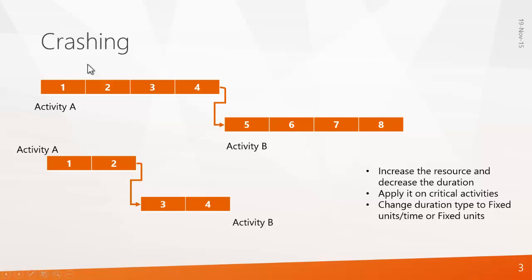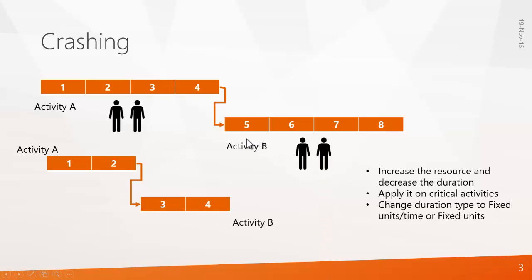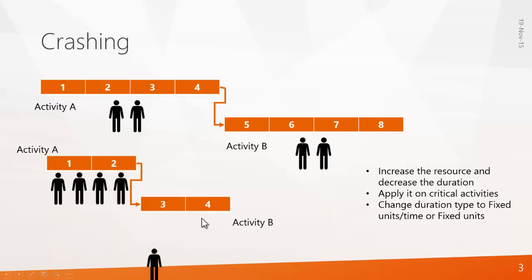The next technique is crashing, which works only on resources. Say there are two activities A and B, each with two masons working on them. If the client asks you to reduce the duration from 8 days to 4 days, you increase the resources from 2 to 4 masons. With 4 masons, the activity duration decreases to 2 days, making the total project duration 4 days. This technique is called crashing.